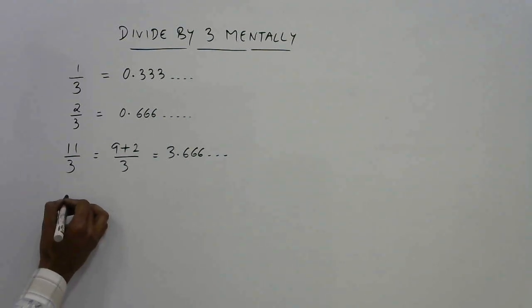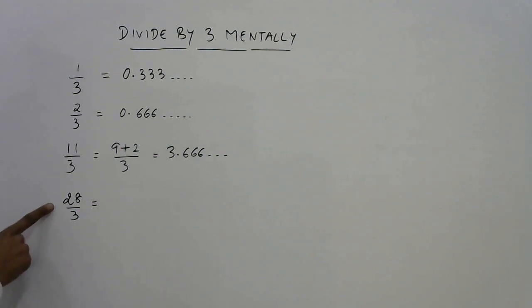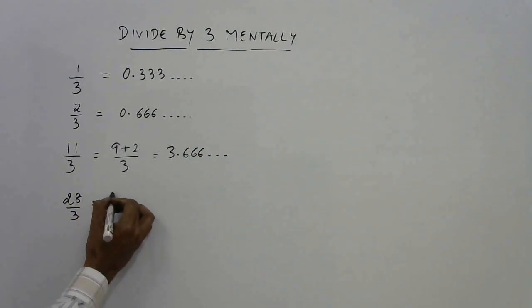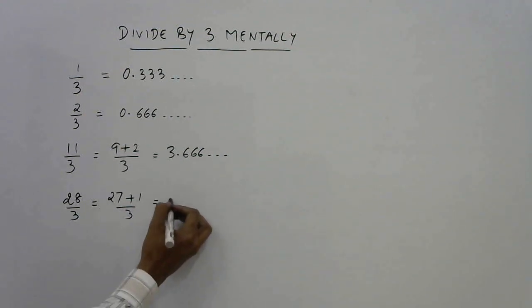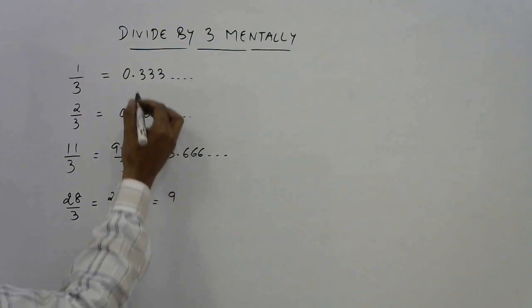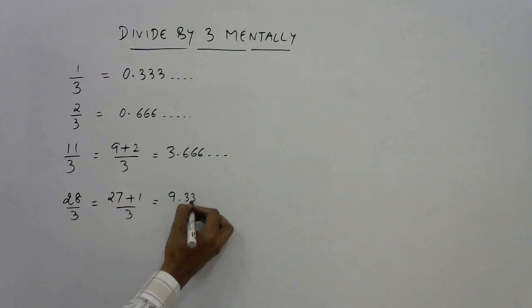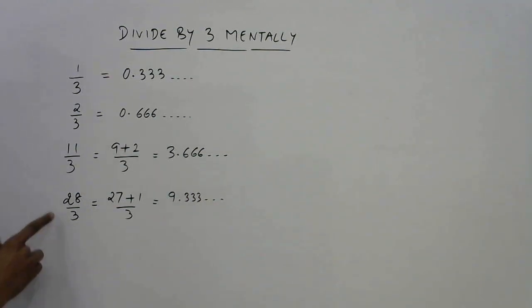Suppose we have 28 by 3. Now see we know that 27 is divisible by 3. So we can write it as 27 plus 1 by 3. Now 27 divided by 3 is 9 and 1 by 3 is 0.333. So 9.333 is what you get on dividing 28 by 3.